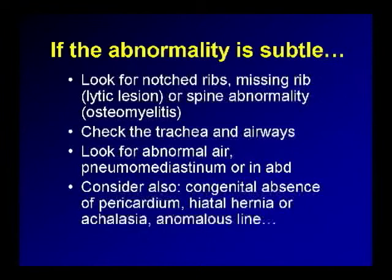Also look at the trachea and airways — sometimes there's an endobronchial or other endoluminal mass, or you'll see an airway cutoff sign. Look for abnormal air in the neck and mediastinum. Look for abnormal air in the liver or abdomen. Several occasions the first abnormality we saw in someone with severe abdominal disasters was a chest X-ray showing air in the portal venous system. Consider also entities like congenital absence of the pericardium or achalasia, esophageal masses, and possible hernias.